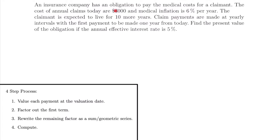Welcome back. Let's start with this example. We have an insurance company with an obligation to pay the medical costs for a claimant. The cost of annual claims today are $3,000 and medical inflation is 6% per year. The claimant is expected to live for 10 more years. Claim payments are made at yearly intervals with the first payment to be made one year from today. Find the present value of the obligation if the annual effective interest rate is 5%.